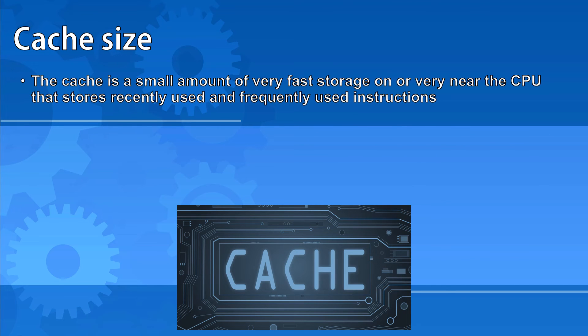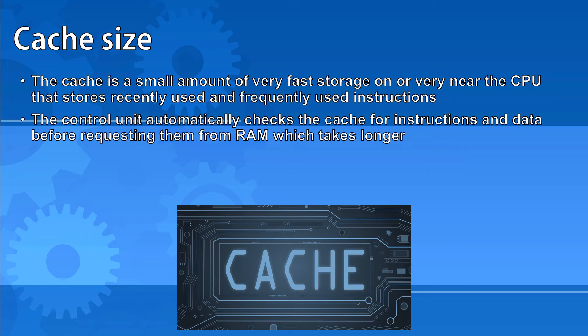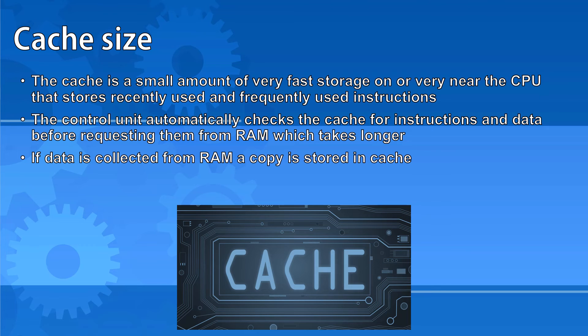The cache is a small amount of very fast storage on or very near the CPU. It stores recently used and frequently used instructions. The control unit automatically checks the cache for instructions and data it's looking for before requesting them from RAM, which takes longer because RAM is further away. If data does have to be collected from RAM, a copy is stored in cache in case it's needed again in a short space of time.